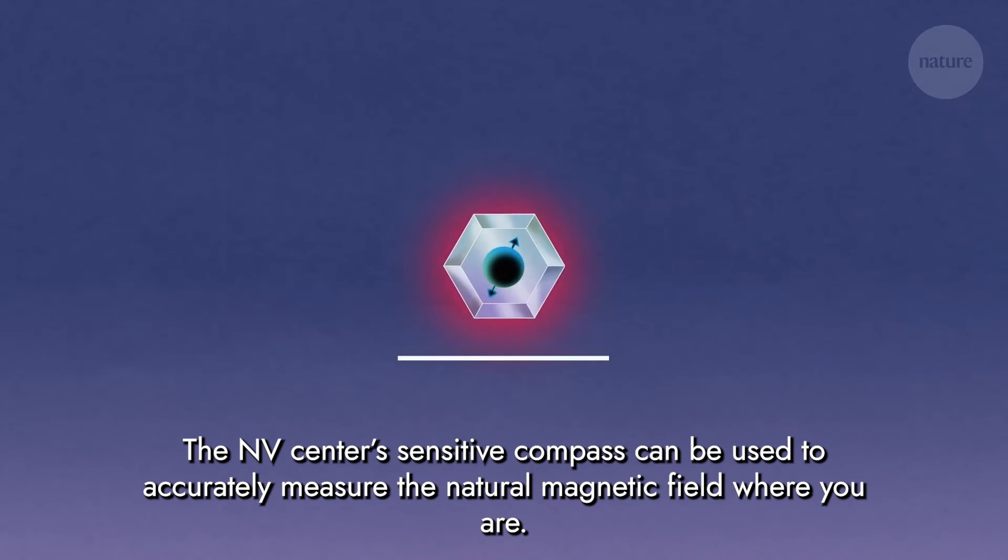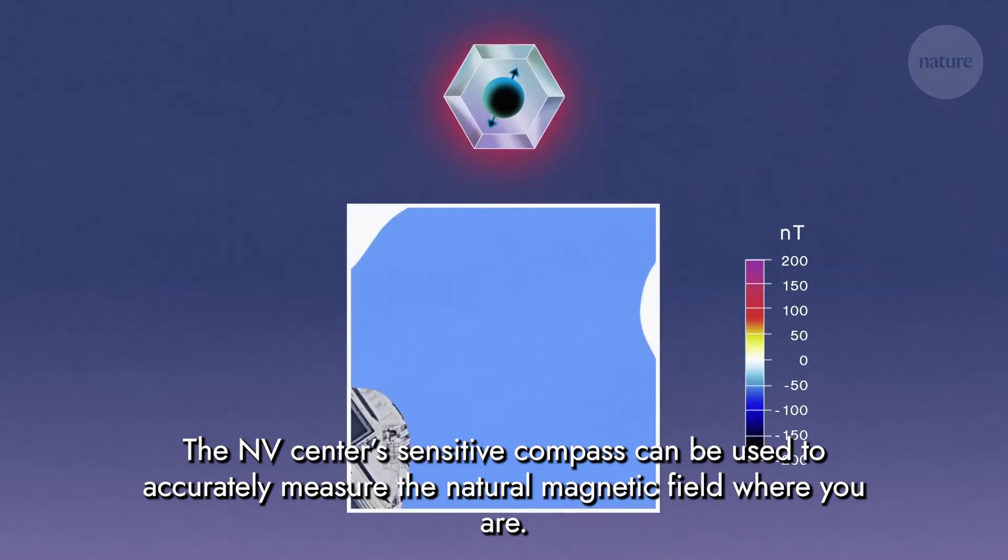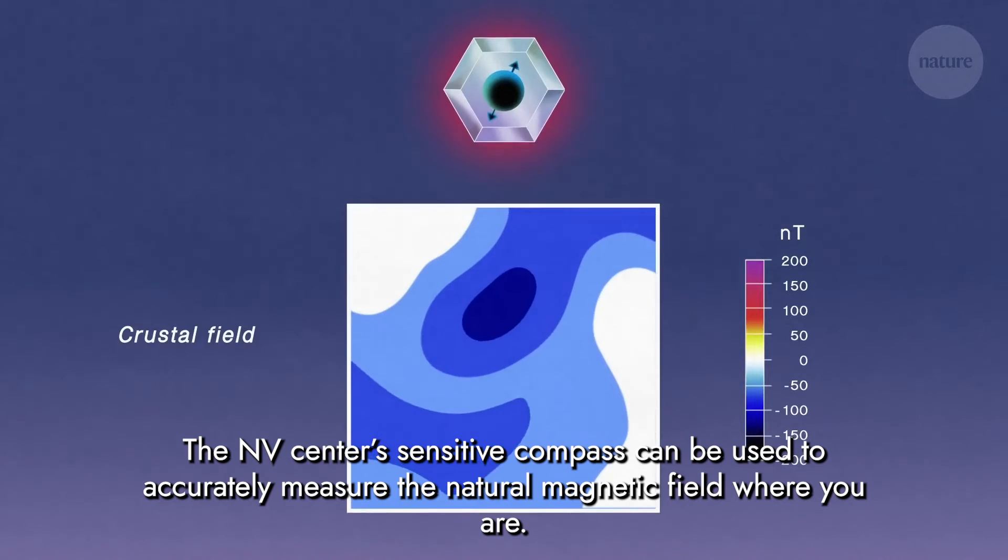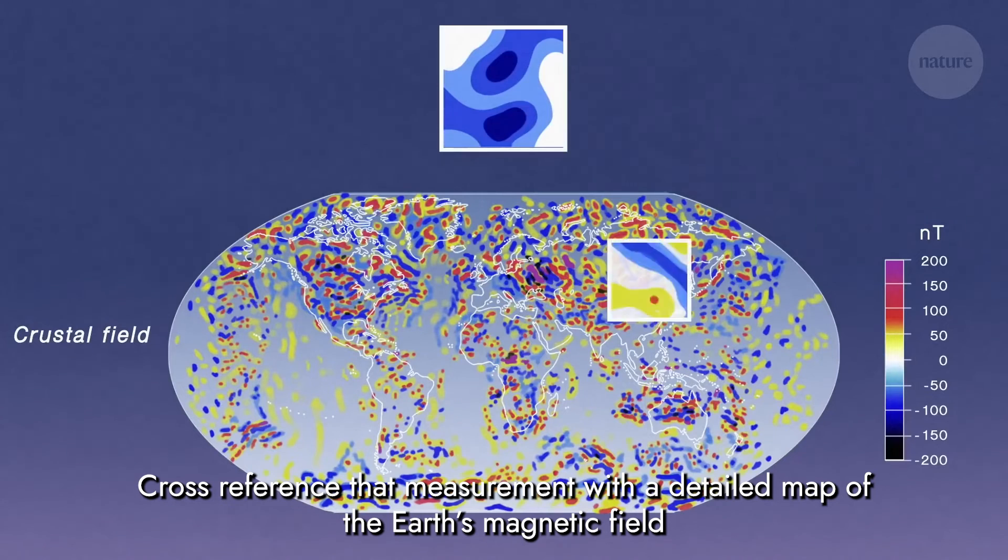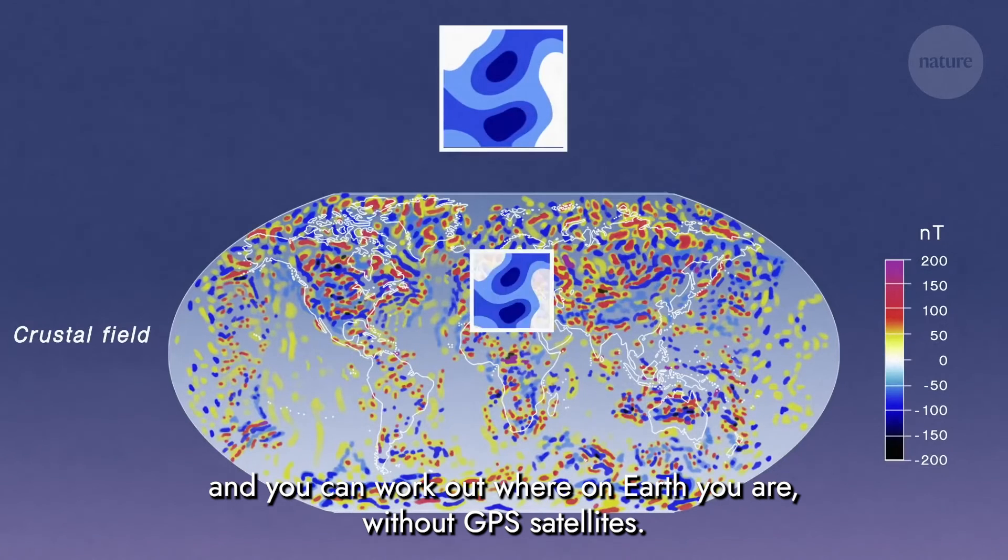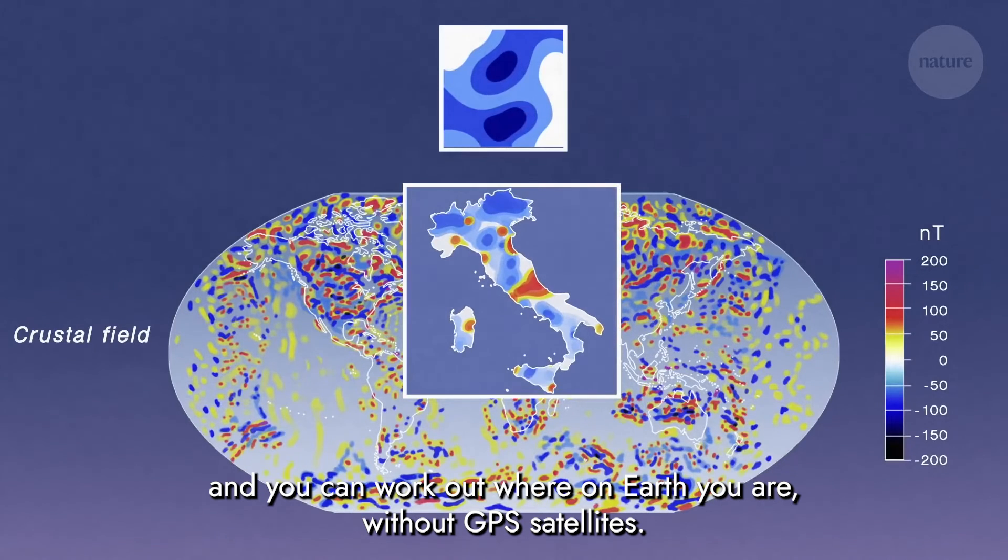The NV centre's sensitive compass can be used to accurately measure the natural magnetic field where you are. Cross-reference that measurement with a detailed map of the Earth's magnetic field, and you can work out where on Earth you are, without GPS satellites.